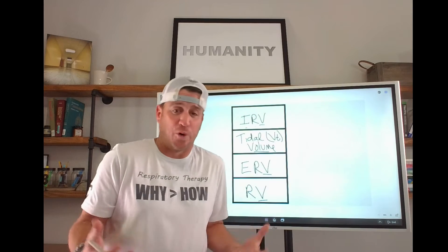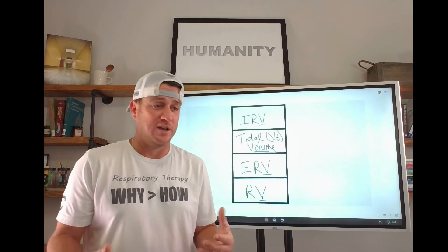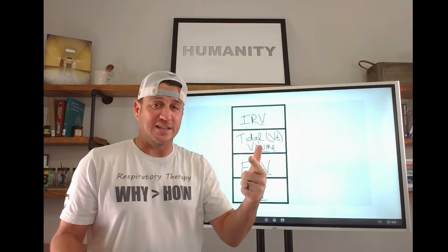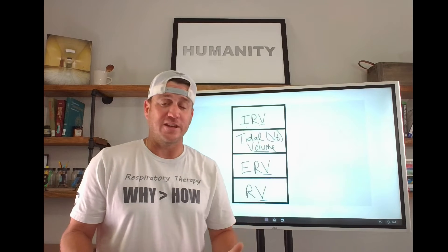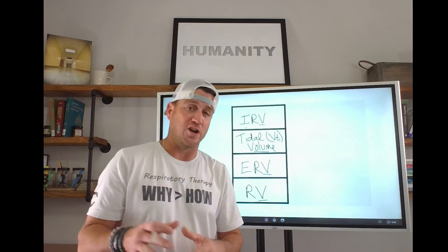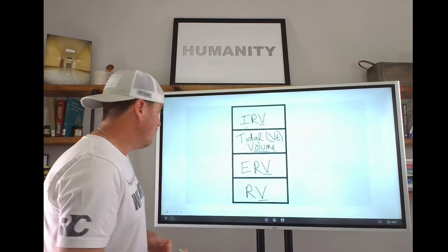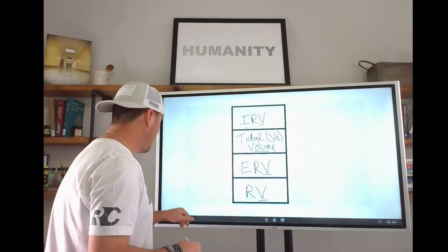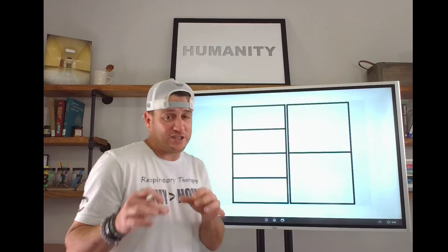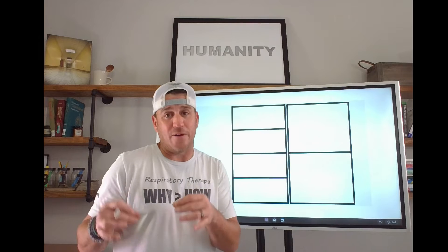There are four volumes, and every single one of them has 'volume' in the name: inspiratory reserve volume, tidal volume, expiratory reserve volume, and the little bit that's left over that we can never fully exhale — residual volume. That's all you have to remember: four volumes. IRV, VT, ERV, and RV.